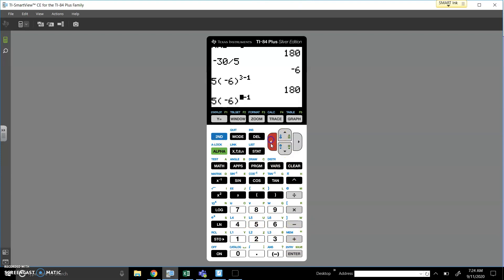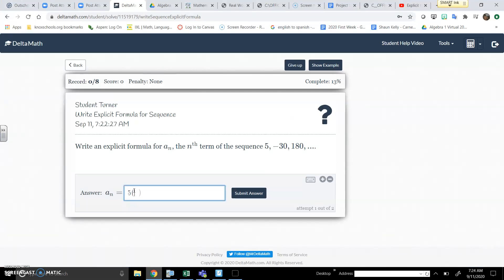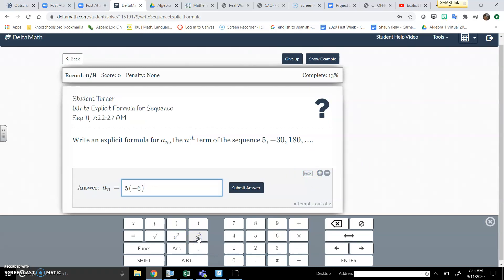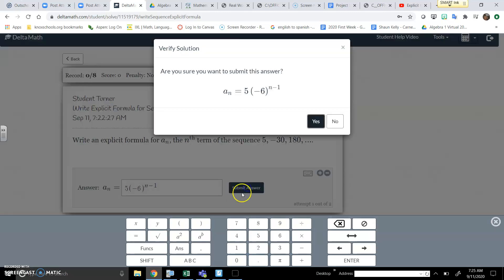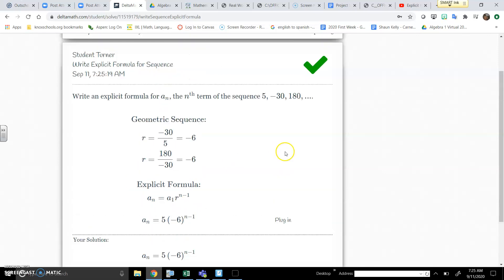Or if I put in 2, it's going to give me that second number, negative 30. Or if you plug in 1, you get out that first number, which was 5. So whenever I'm trying to answer this question, I'm going to say 5 was the first number, negative 6 was the common ratio. And then if you press this little keyboard button, you can raise to a different power, and then you can just put N minus 1. If you look through the example, they'll show you exactly how they found the common ratio and how they plugged all the values in.